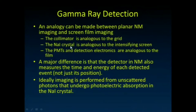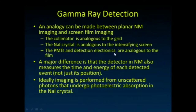The sodium iodide crystal we use in planar nuclear imaging is analogous to the intensifying screen or the input phosphor in CR-type imaging. The photomultiplier tubes and detection electronics are analogous to the film or digital detectors in digital radiography. The major difference is that the detector in nuclear medicine also measures the time and energy of each event, not just where it happened on the imaging detector.